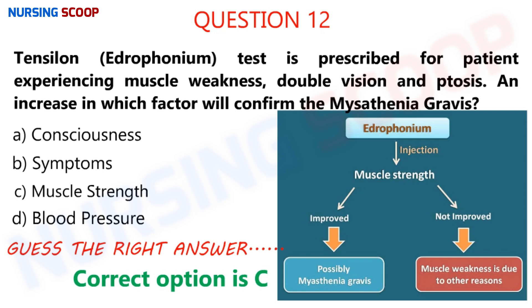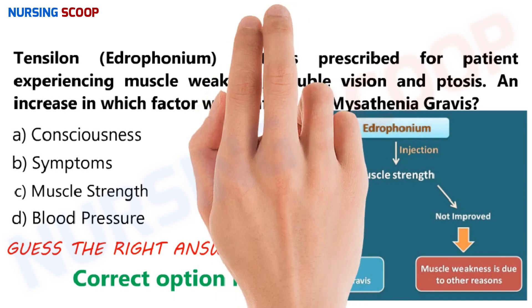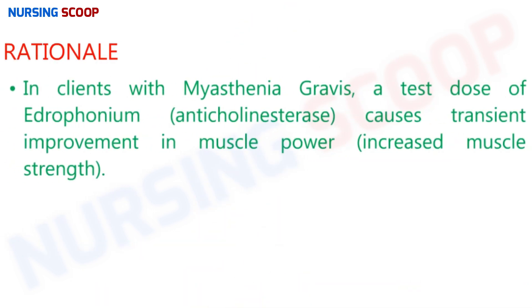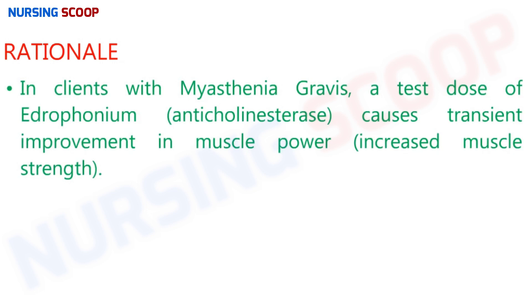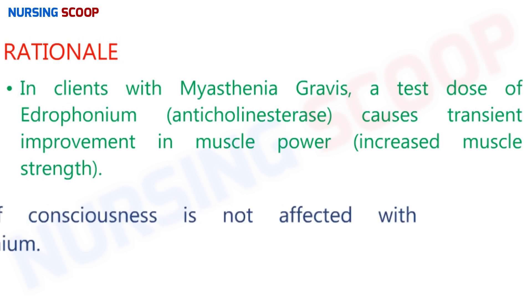The correct option is C. In a client with myasthenia gravis, a test dose of edrophonium, which is an anticholinesterase drug, causes a transient improvement in muscle power. So increased muscle strength is the correct answer. Edrophonium increases the availability of acetylcholine, which helps in a temporary reduction of symptoms.